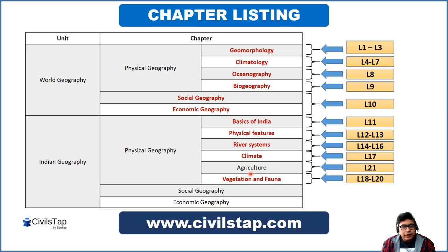As you already know, in this geography series we have already completed 20 lectures. We have discussed physical geography concepts and human geography concepts, and after that the physical geography part of Indian geography. In this lecture 21 of this series, we will talk about agriculture in India.